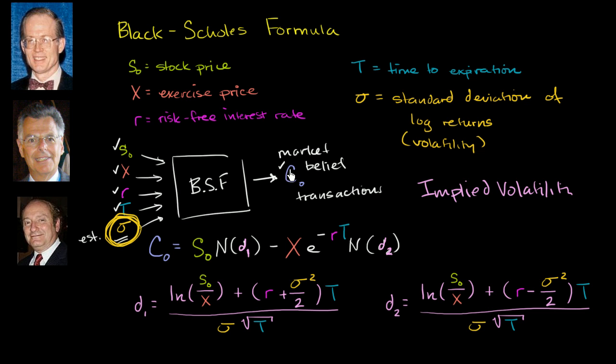They're saying, options are trading all the time. Can we use that price, the market belief of what those prices should be, and work backwards through Black-Scholes to figure out - because we know these are all facts, we can look these things up - but based on what the market is trading these options at, can we figure out the implied volatility, the implied market belief about volatility for that security?